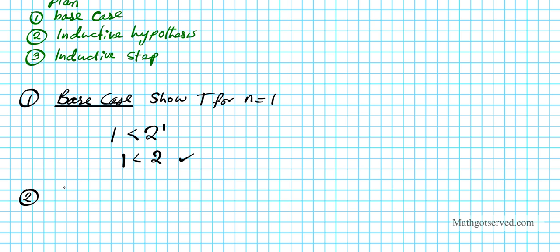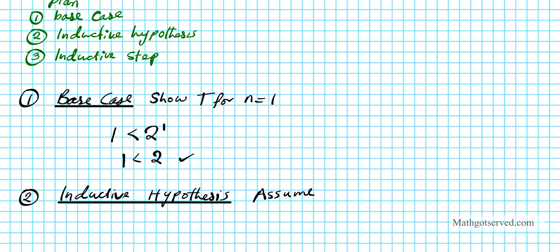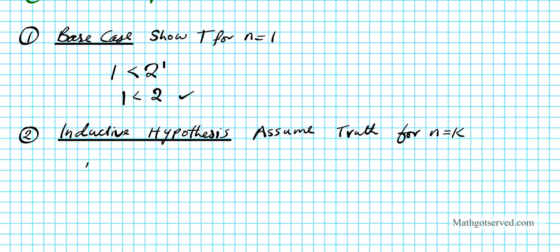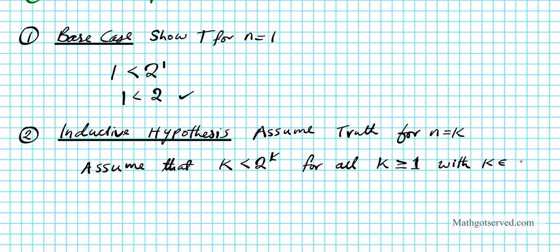Part two is the inductive hypothesis. For the inductive hypothesis we are going to assume that the statement is true for n equals k. We simply plug in k into the statement and assume it is true: k is always less than 2 to the k, for all k greater than or equal to 1, where k is in the set of integers.